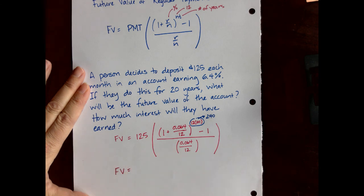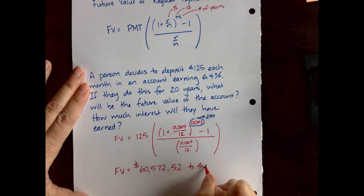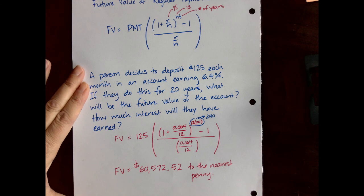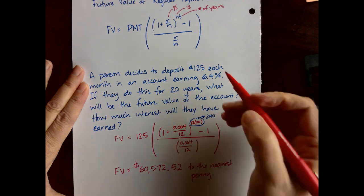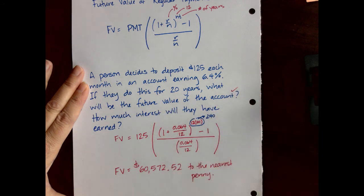When I do that I get a future value of $60,572.52 to the nearest penny. So that takes care of the future value of the account after 20 years.